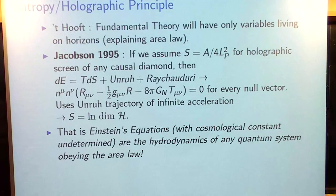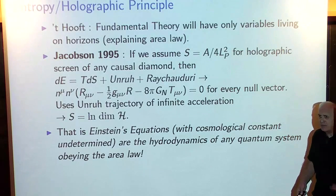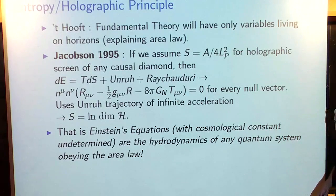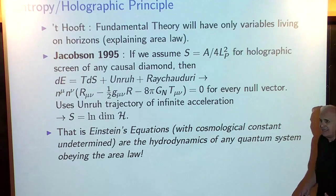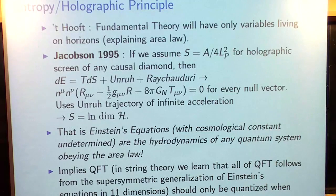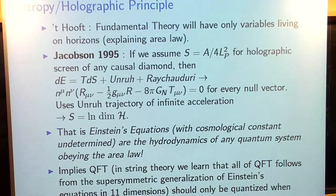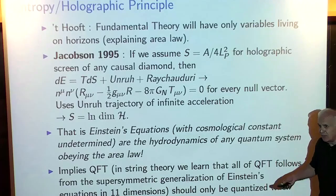The remarkable thing, which Ted says very explicitly in the paper, is that it means that Einstein's equations — except for the cosmological constant — can be thought of as the hydrodynamics of some quantum system that obeys the area law. What we know about hydrodynamics from condensed matter physics is that hydrodynamics is true as a set of classical equations whether or not the system is in its ground state. In general, you do not quantize hydrodynamics. You only quantize hydrodynamics when you have a system with a ground state and you're looking at small, low-energy perturbations around that ground state.